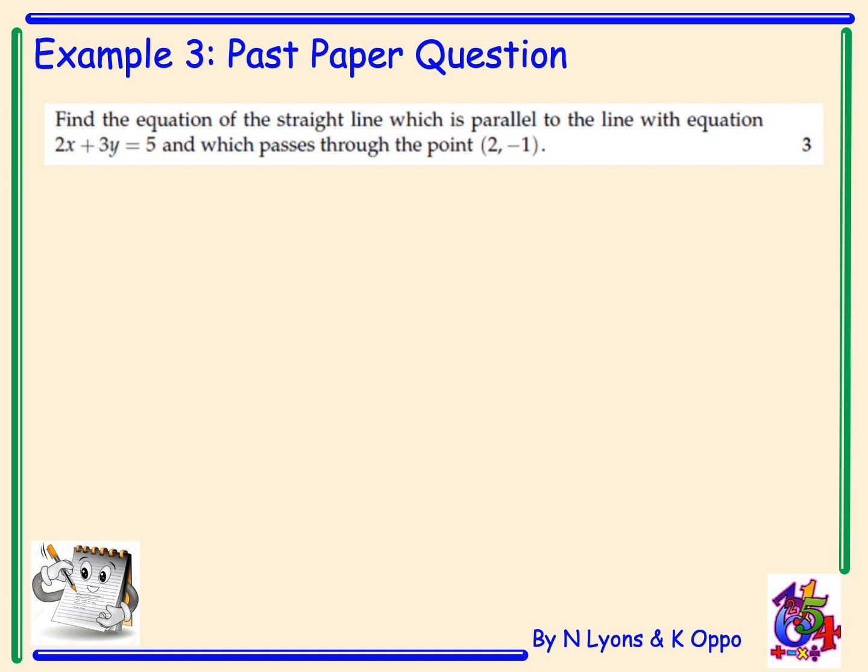Example 3 is a past paper question worth 3 marks: Find the equation of the straight line parallel to 2x plus 3y equals 5 and passing through the point (2, -1). Please pause the video and try this on your own using the helpful hints provided.